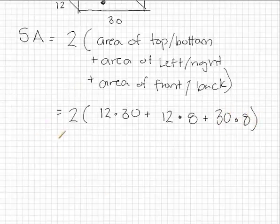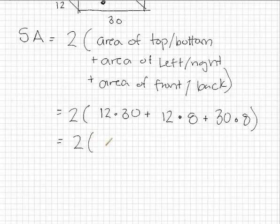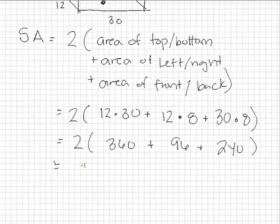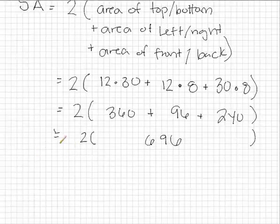And now it's just an arithmetic problem. Let's go ahead and do our multiplication on the inside first. Well 30 times 12 is 360. 12 times 8 is 96. And 30 times 8 is 240. Let's go ahead and add on the inside of the parentheses here. We add all that together we get 696 in the middle. Multiply that by 2 and we get 1392.